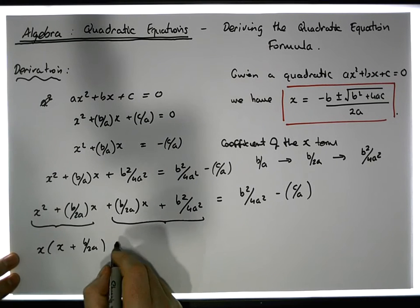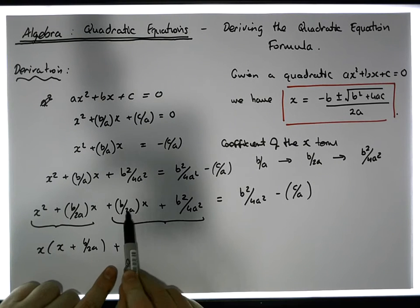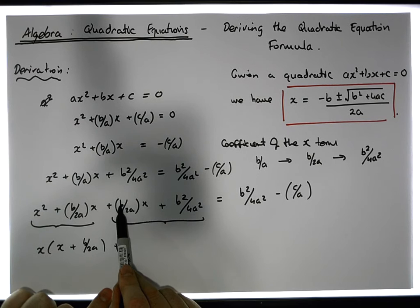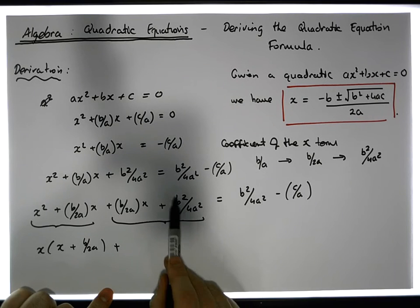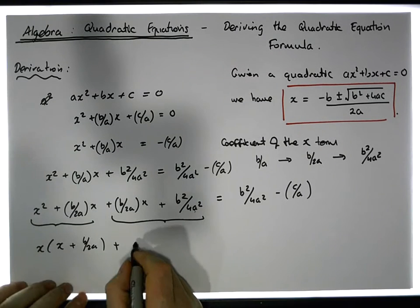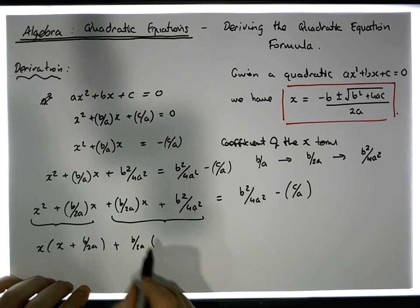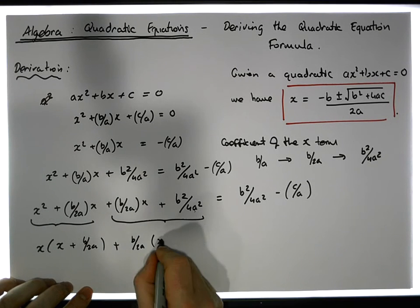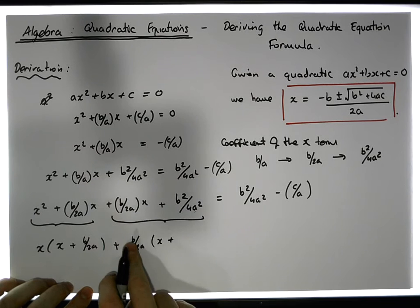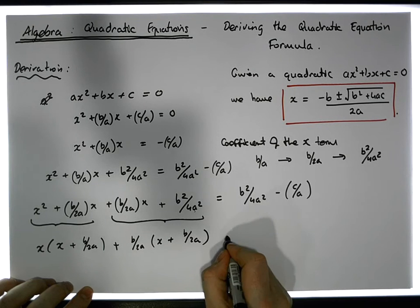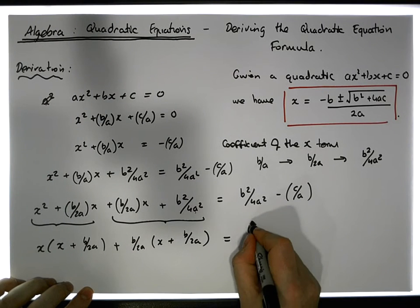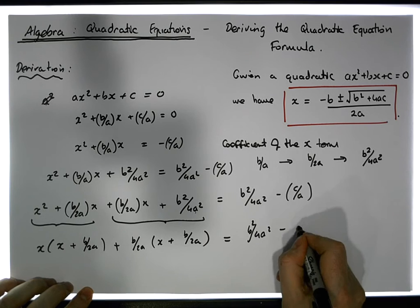We have b over 2a times x, and there's a b over 2a common across these two terms, so let's take it out. This is b over 2a times x, plus — what do we multiply this by to give us this? We multiply by b over 2a to square it, and also by 2a to give us 4a squared, so we multiply this by b over 2a, which must equal b squared over 4a squared minus c over a.